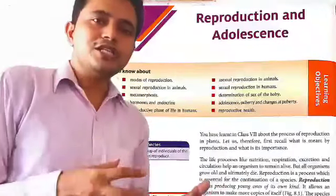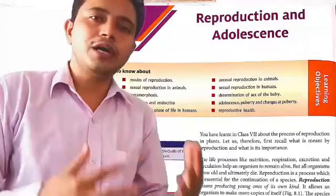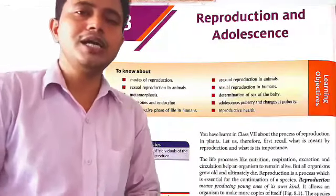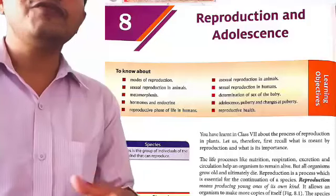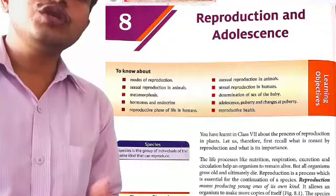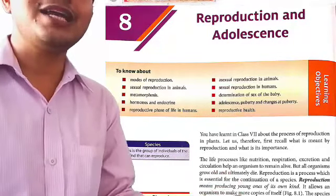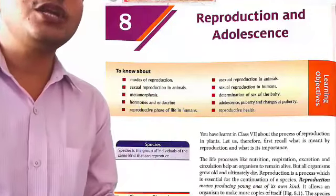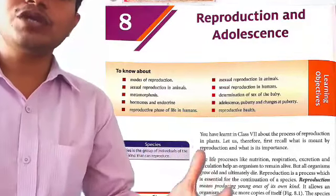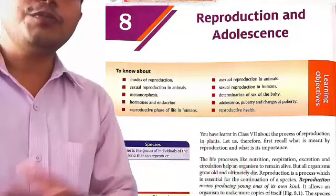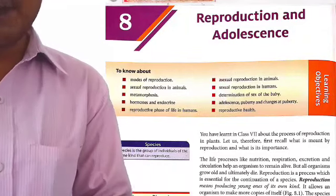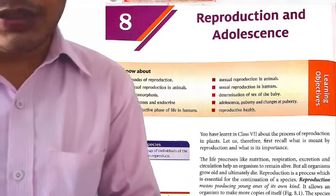There are many organisms that reproduce. For example, a dog is born and reproduces. If dogs don't reproduce, they would go extinct. But when they reproduce, the young ones grow up, the old ones die, and new generations increase the population. So reproduction is a process which is essential for the continuation of a species.